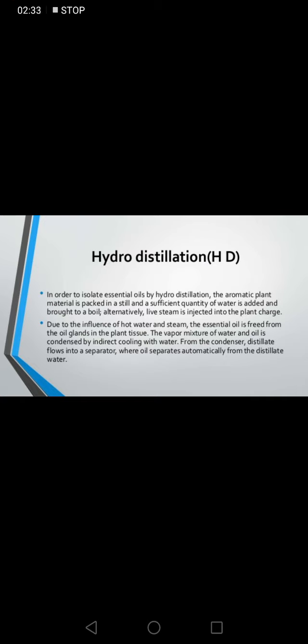Hydro distillation (HD): in order to isolate essential oils by hydro distillation, the aromatic plant material is packed in a still and a sufficient quantity of water is added and brought to boil. Alternatively, live steam is injected into the plant charge. Due to the influence of hot water and steam, the essential oil is freed from the oil glands in the plant tissue. The vapor mixture of water and oil is condensed by indirect cooling with water, and the distillate flows into a separator where oil separates automatically from the distilled water.